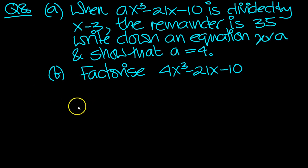I've got the question summarized here. So when this cubic is divided by x minus 3, the remainder is 35. So we need the remainder theorem for part a.